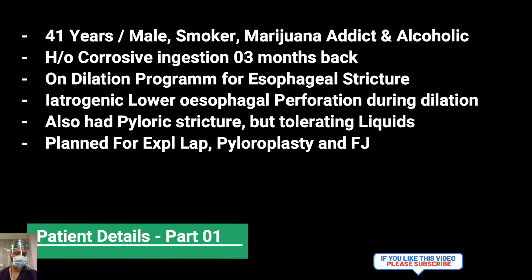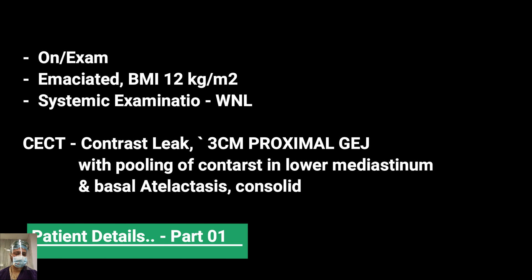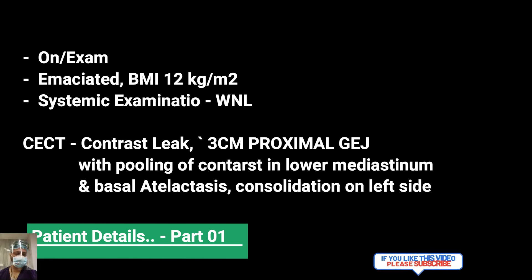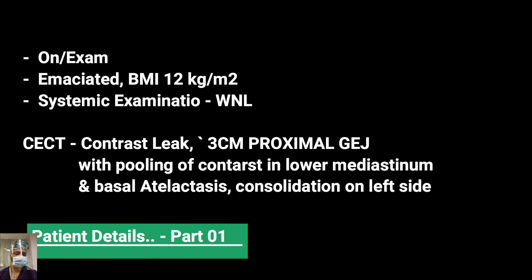During a previous endoscopic evaluation, he was also found to have a pyloric narrowing which was partially negotiable. He was tolerating liquids. During one of his dilatations, he had an iatrogenic perforation of the esophagus, and the patient was shifted for surgical management — planned for pyloroplasty and feeding jejunostomy. The patient was emaciated with a very low BMI of 12, with no systemic findings other than very poor nutritional status. CT abdomen showed a contrast leak approximately 3 cm proximal to the gastroesophageal junction, with pooling of contrast in the lower mediastinum.